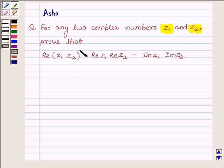prove that the real part of Z1 times Z2 is equal to the real part of Z1 times the real part of Z2, minus the imaginary part of Z1 times the imaginary part of Z2.